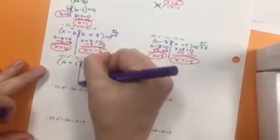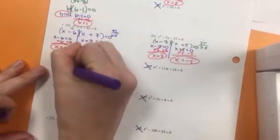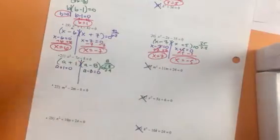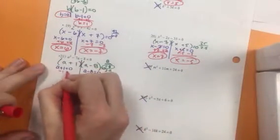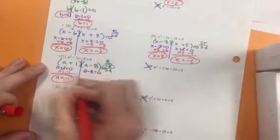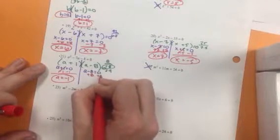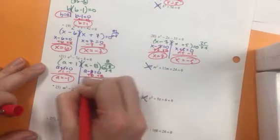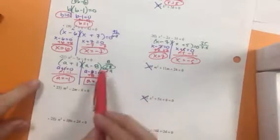After we factor, we are going to set each side equal to 0. And then solve for a. And then add 8 to both sides. You are always welcome to find shortcuts to solve.